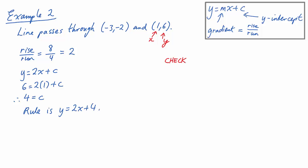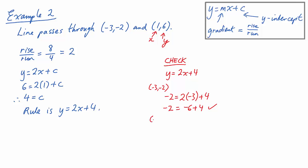Let's check our answer of y equals 2x plus 4. It needs to pass through (-3, -2) and (1, 6). Substituting x equals -3 and y equals -2, we get negative 2 equals 2 times negative 3 plus 4, which simplifies to negative 2 equals negative 6 plus 4 — that's true. Substituting x equals 1 and y equals 6, we get 6 equals 2 times 1 plus 4, which is 6 equals 2 plus 4 — also true. Therefore both points are on the line y equals 2x plus 4, so we have the right answer.